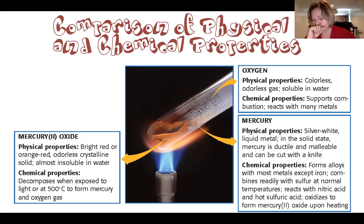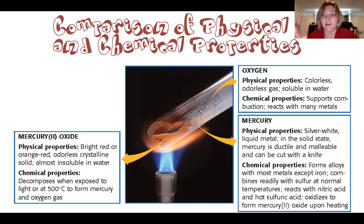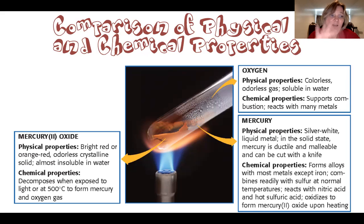The chemical property of oxygen is that it supports combustion — combustion means burning — and reacts with many metals. That word 'reacts' signals a chemical property. For mercury, physical properties include its color, the state it's in, and that in the solid state it's ductile and malleable. Those don't change the fact that it's still mercury. Chemical properties of mercury: it forms alloys with most metals except iron, combines readily with sulfur at normal temperatures, and oxidizes. Oxidizing is a chemical change — another word for the tarnishing mentioned earlier.